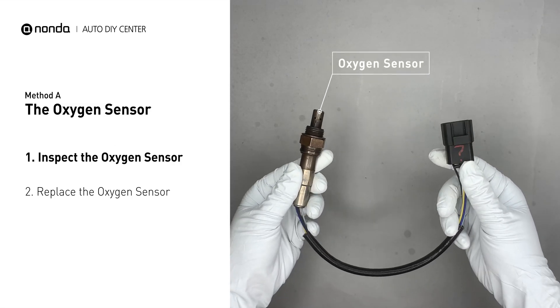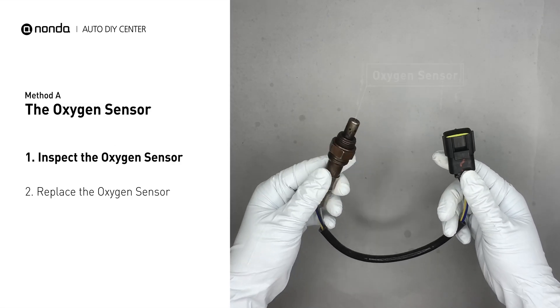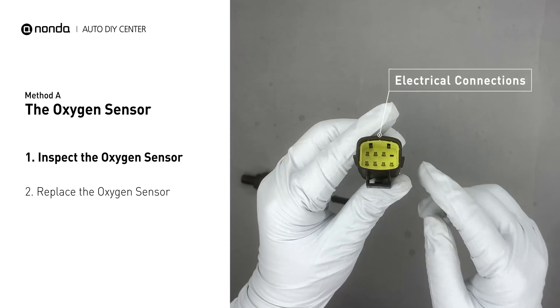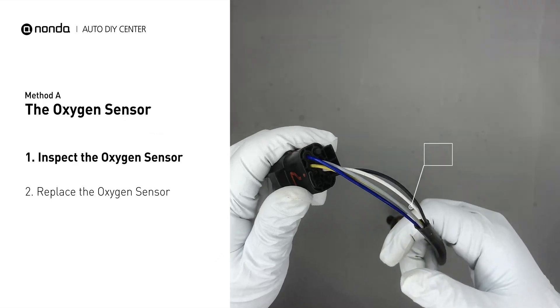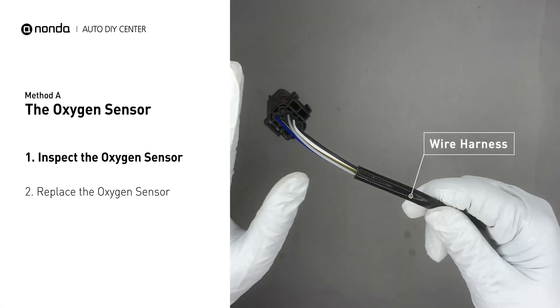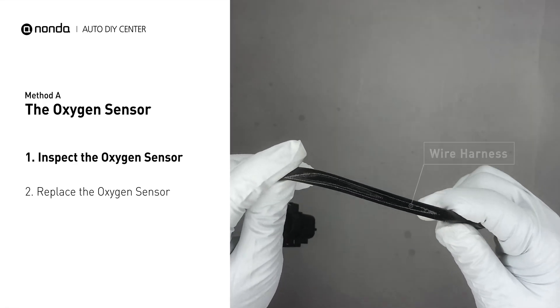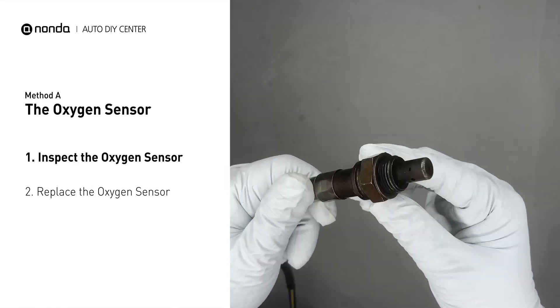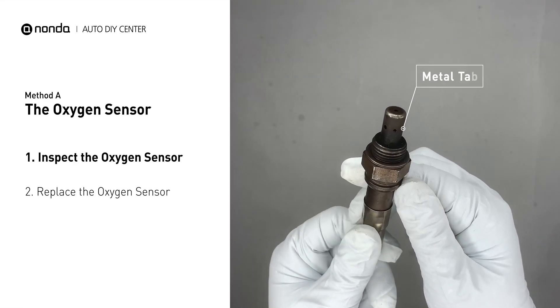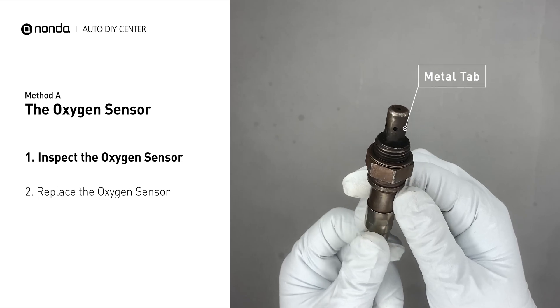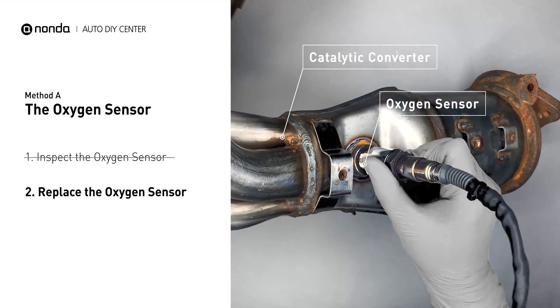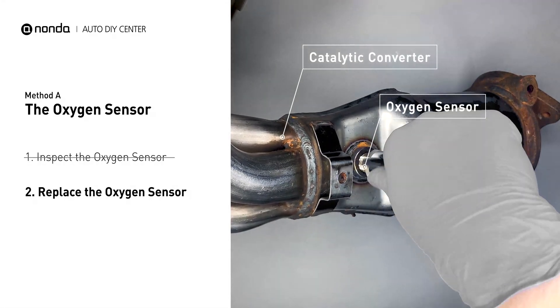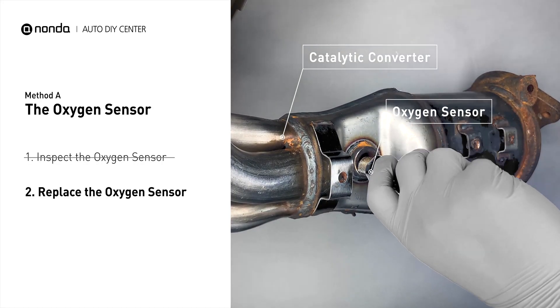Visually check the oxygen sensor's electrical connections, wire harness, and metal tabs for any damages. If damages are found, then replace the oxygen sensor.